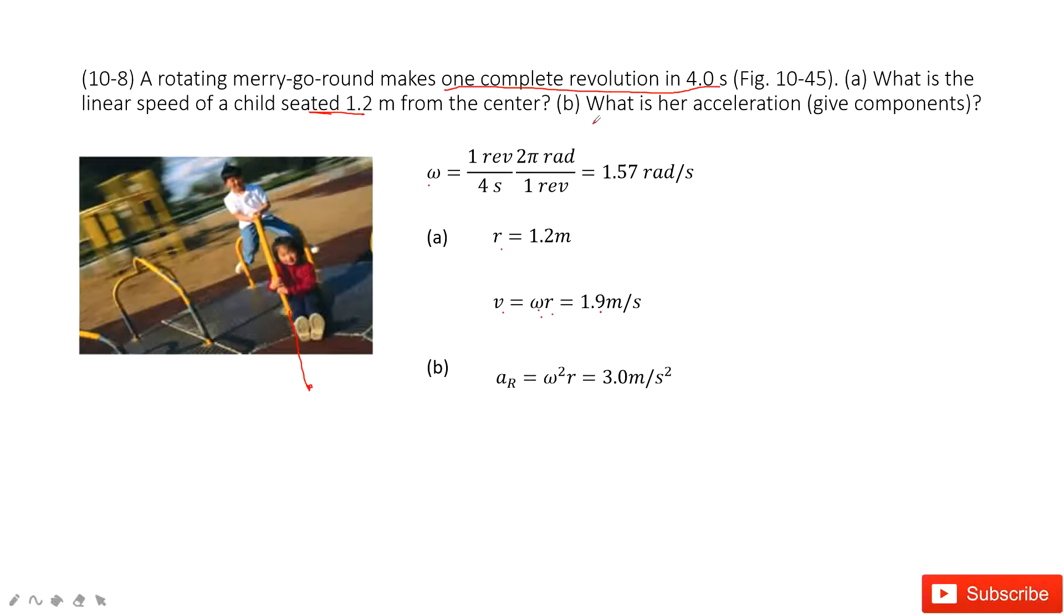The next one asks you to find the linear acceleration. So for linear acceleration, it's omega squared times r. Agree? So in this one, you just input omega squared times r to get the final answer there.